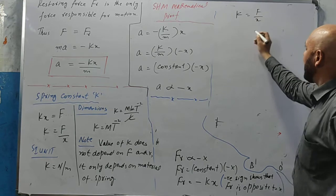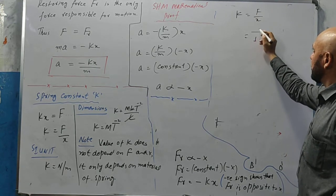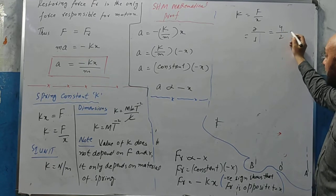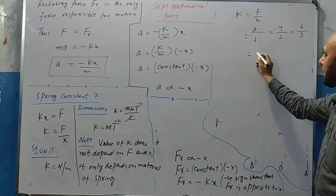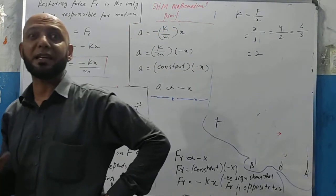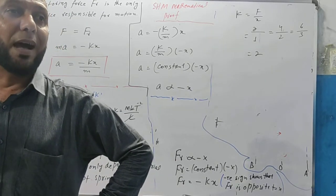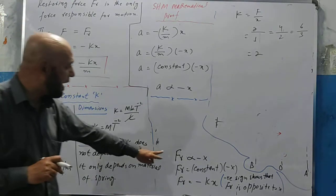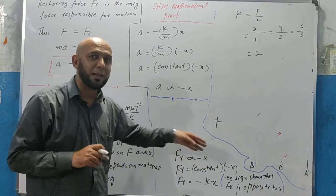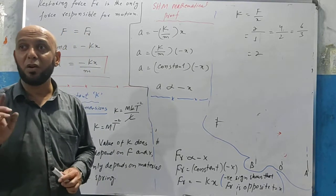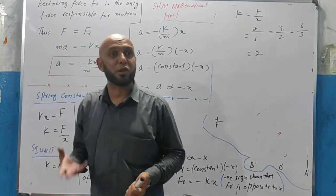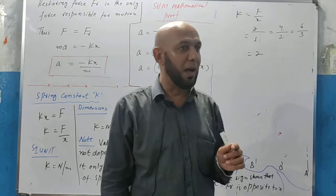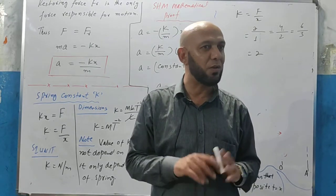For example, using k = F/x: if x = 1, spring force = 2 N; if x = 2, spring force = 4 N; if x = 3, spring force = 6 N. The answer is always k = 2. F and x both change proportionally, so k remains constant — it depends on the material of the spring.